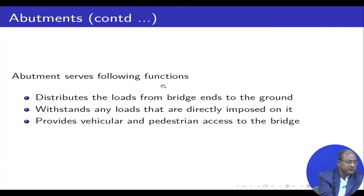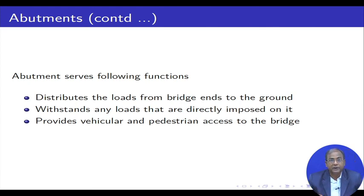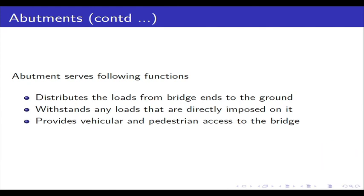The abutment serves the following functions: it distributes the loads from the bridge ends to the ground, withstands any loads directly imposed on it, and provides vehicular and pedestrian access to the bridge. For a single span bridge, we have abutments at the two ends.